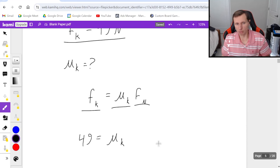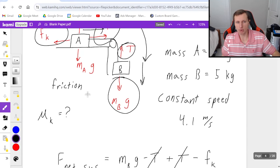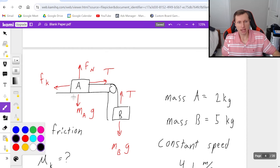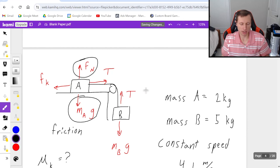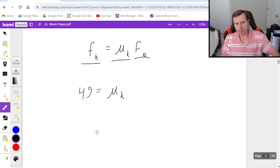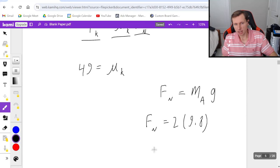So 49 equals mu_k times the normal force. And now if we want to find the normal force, again, there's no equation for normal force. I got to look back at my free body diagram, and I see that in the y direction, F_N and m_A*g are directly opposed to each other. What that means is they must equal each other, also because block A is not moving up or down. So what that means is F_N is equal to the force of gravity on block A, mass times gravity. So normal force equals two times 9.8, in other words, 19.6.